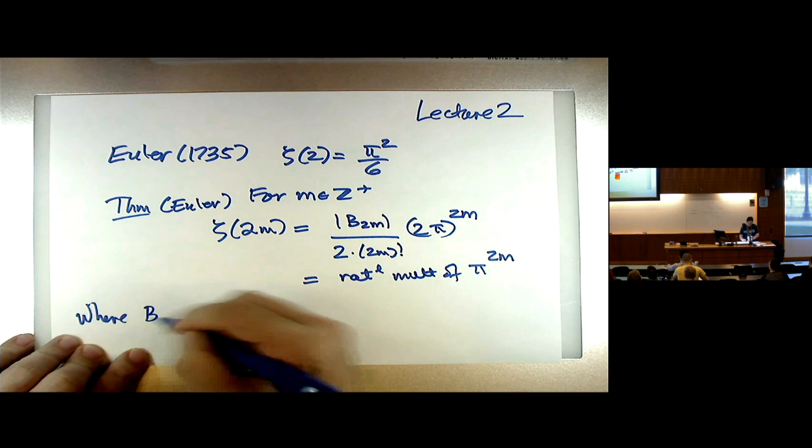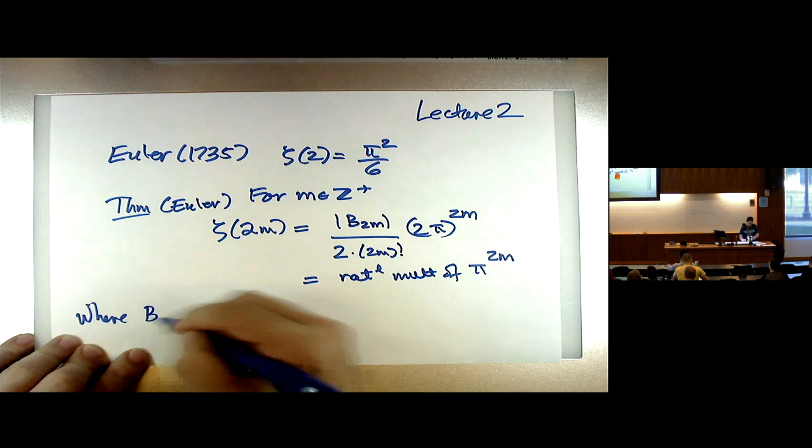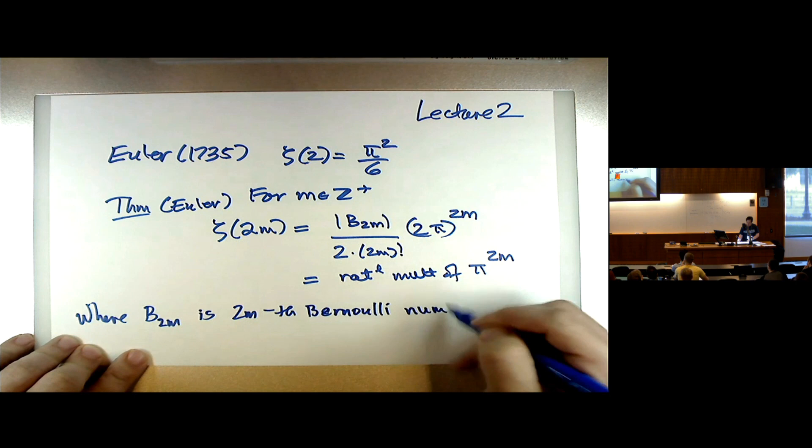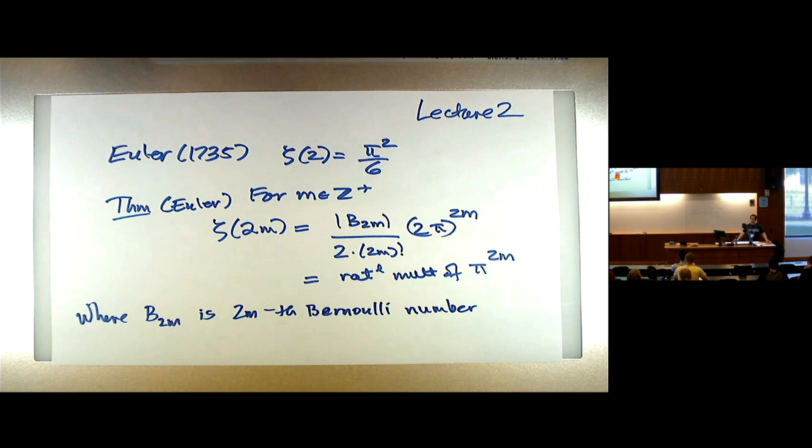So this is a rational multiple of pi to the 2m, once I tell you what B_{2m} is. These are the Bernoulli numbers. B_{2m} is the 2m-th Bernoulli number. Those are a famous, somewhat obscure, but famous sequence of rational numbers. They show up all across mathematics — in number theory, largely because of this type of situation, and in analysis. The Euler-Maclaurin summation formula uses Bernoulli numbers.